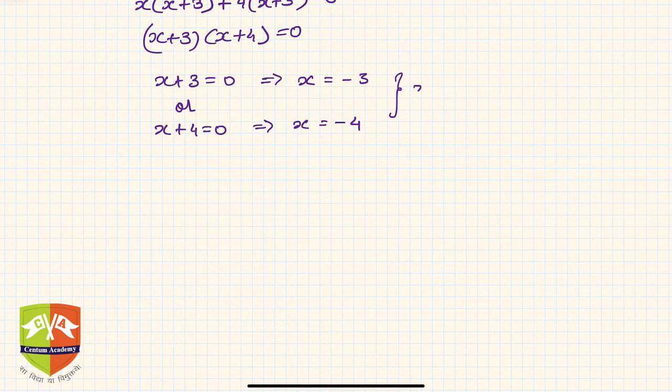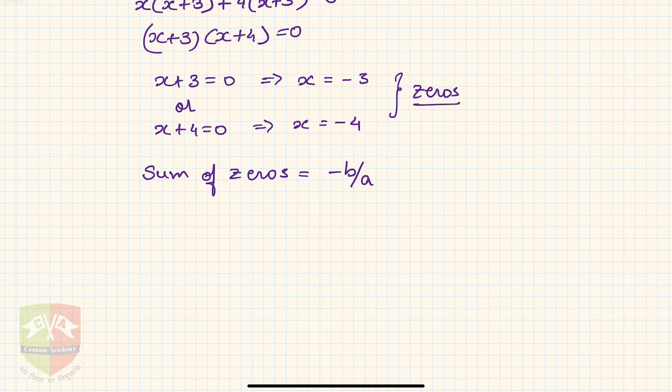Now we have to verify the relationship between the zeros and the coefficients. We know that if α and β are the zeros, then sum of zeros is given by -b/a.